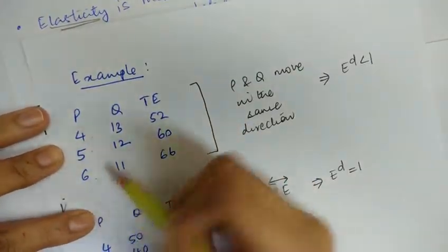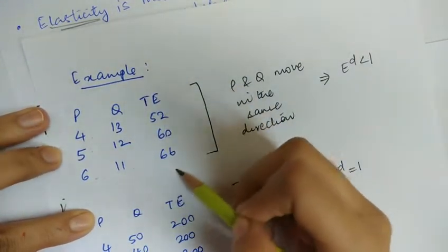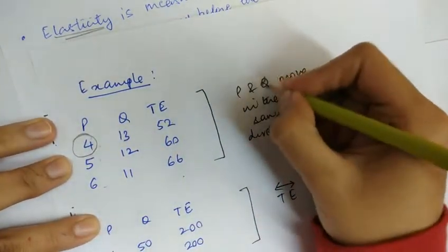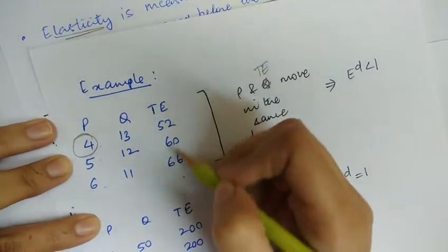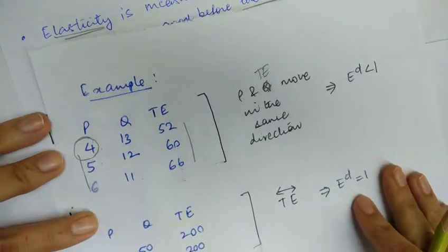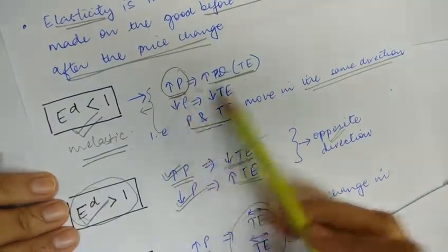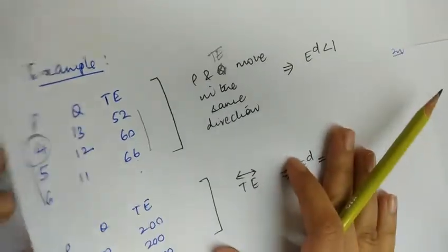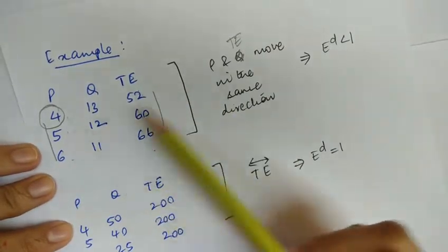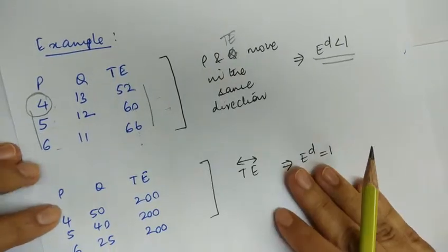In this example, you can see that with the rise in price the total quantity is falling but the total expenditure is increasing — that is, price and total expenditure are moving in the same direction. As we studied, when the total expenditure rises with a rise in price, the elasticity of demand is less than one.